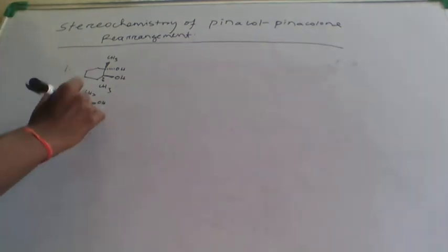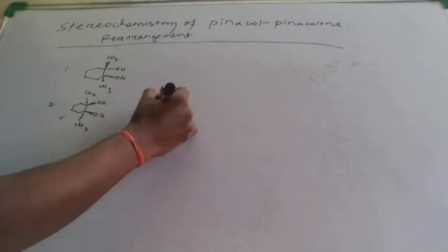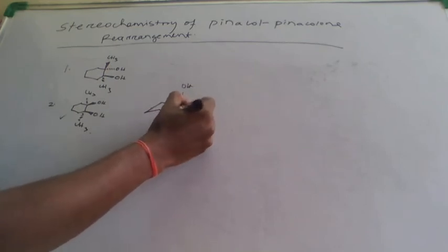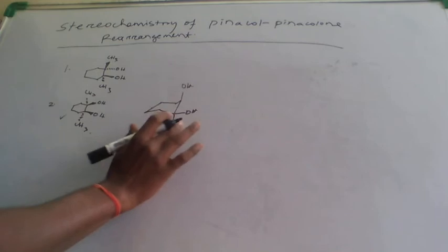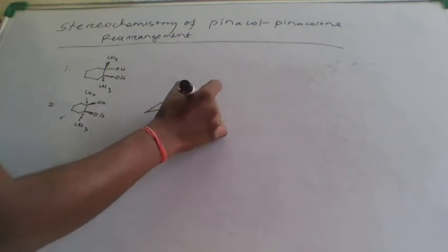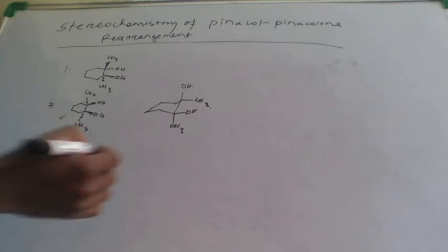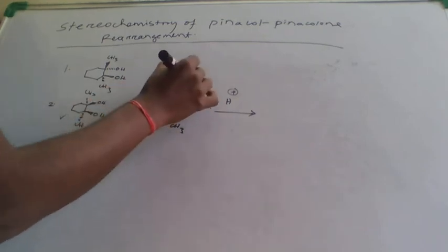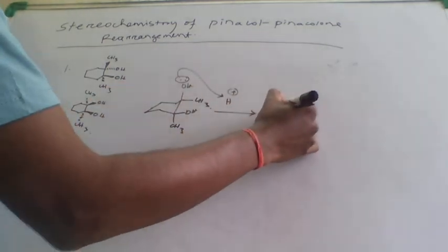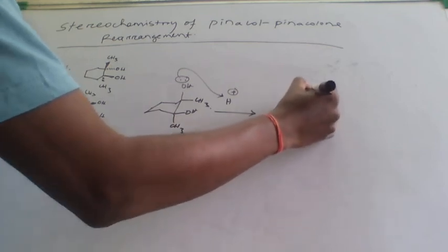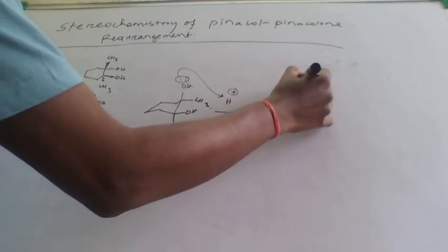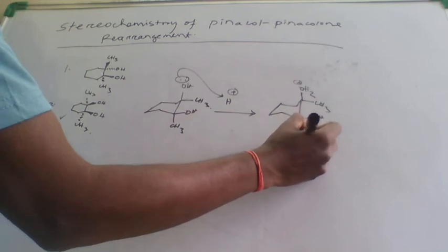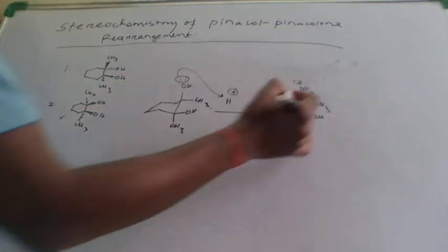Let's see the second example. Draw the chair form of this molecule — both CH3 and OH groups are above in this case. When this molecule is treated with acid, protonation takes place and OH2 positive is formed on one carbon. The carbocation is then generated from that carbon atom.